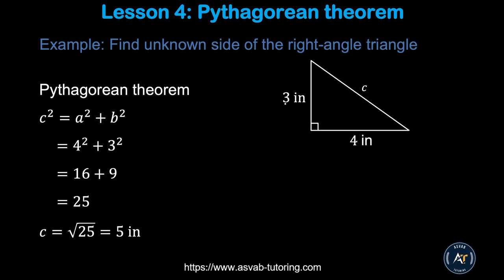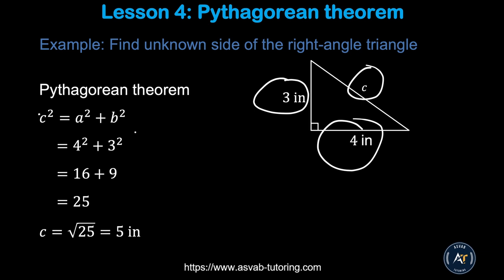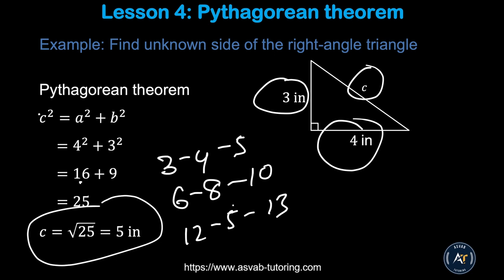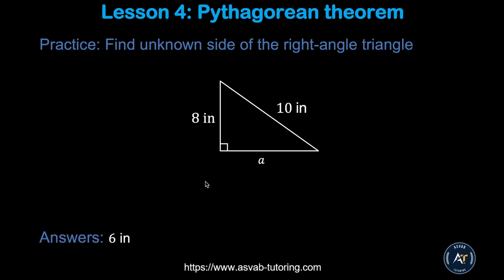This is a right triangle with sides 3 and 4. You have to find c. Use the formula a squared plus b squared equals c squared: 4 squared plus 3 squared is 16 plus 9, which equals 25, so c equals 5. You should know the common Pythagorean triples: 3-4-5, 6-8-10, and 5-12-13 triangles. For a practice problem, pause the video and try by yourself — make sure you get the correct answer.